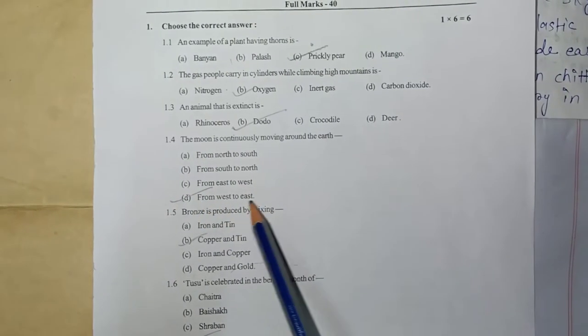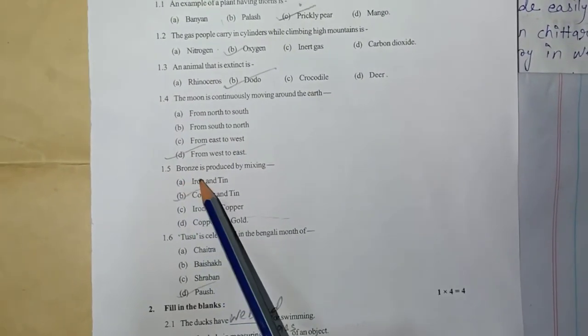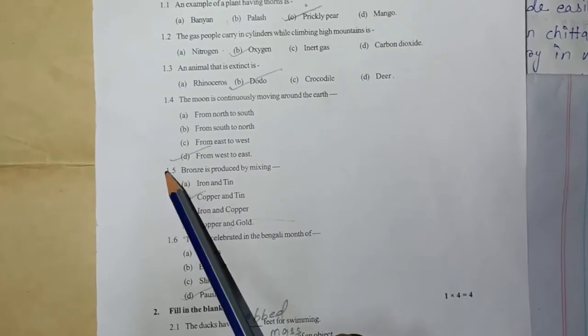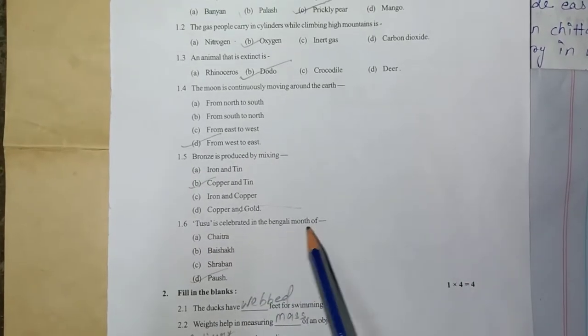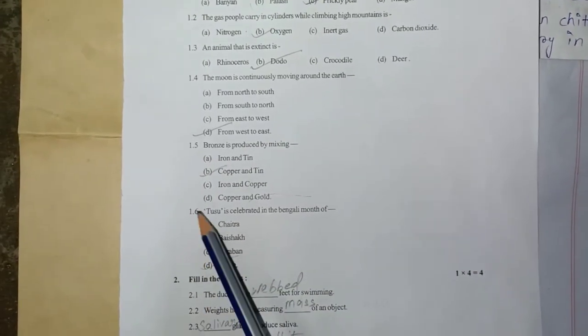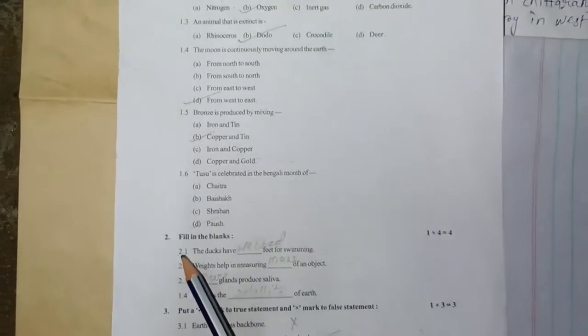Answer: from west to east. 1.5: Bronze is produced by mixing - answer: copper and tin. 1.6: Tushu is celebrated in the Bengali month of Poush. Question number 2.